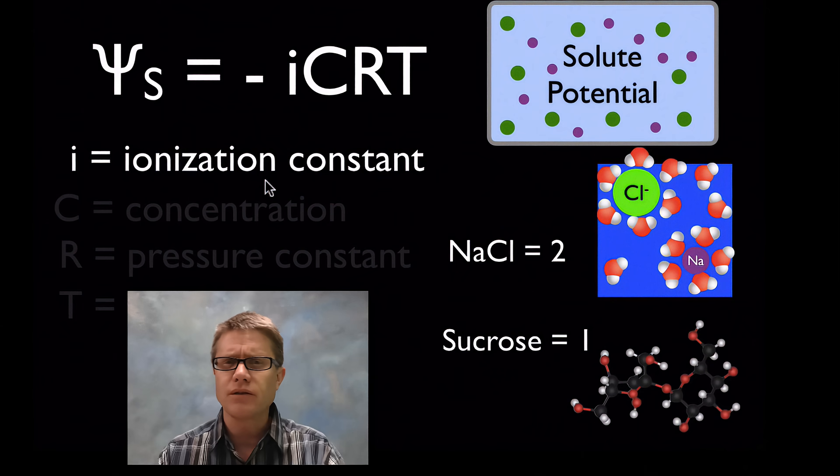Let's start with the ionization constant. Ionization constant is not going to have units associated with it, it's just a factor. And it's always going to be somewhere from one to two, sometimes including one.